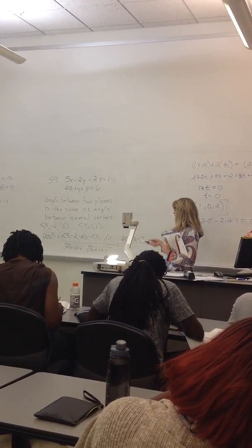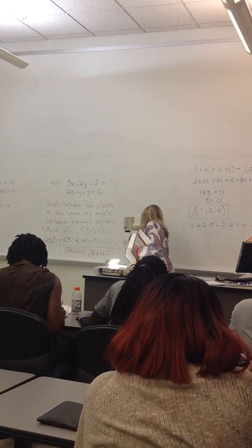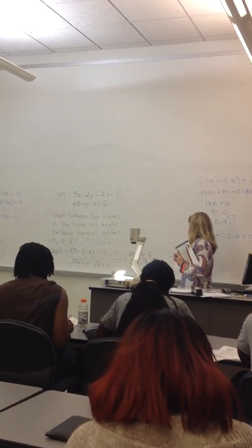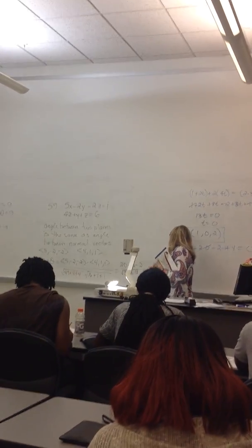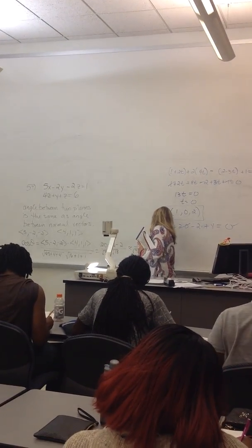And let's see, 25 plus 4 plus 4 is 33. And then I get square root of 18. So we get 16 over square root of 33 times square root of 18. And again, that's the cosine of the angle.